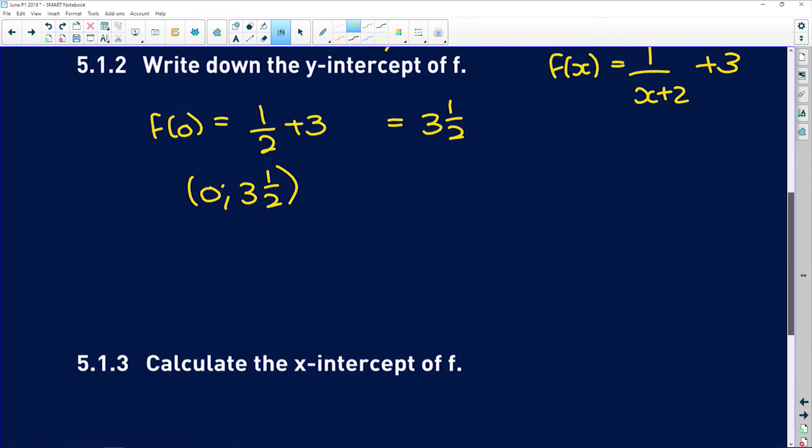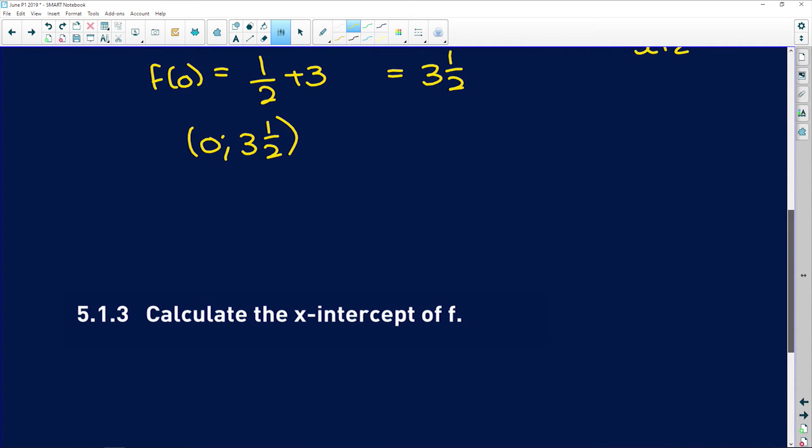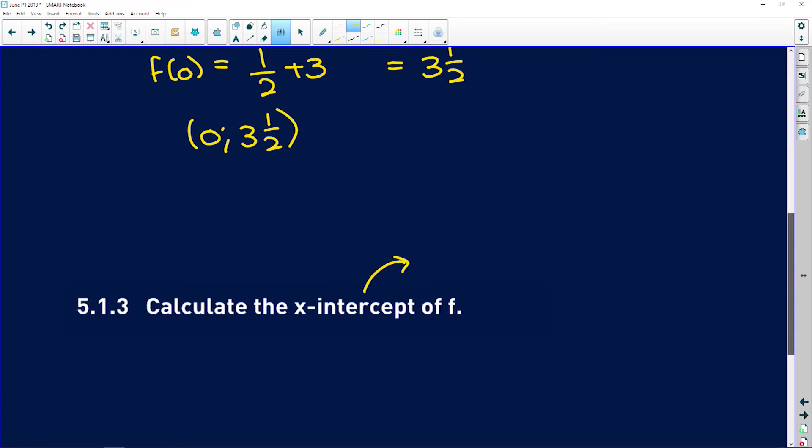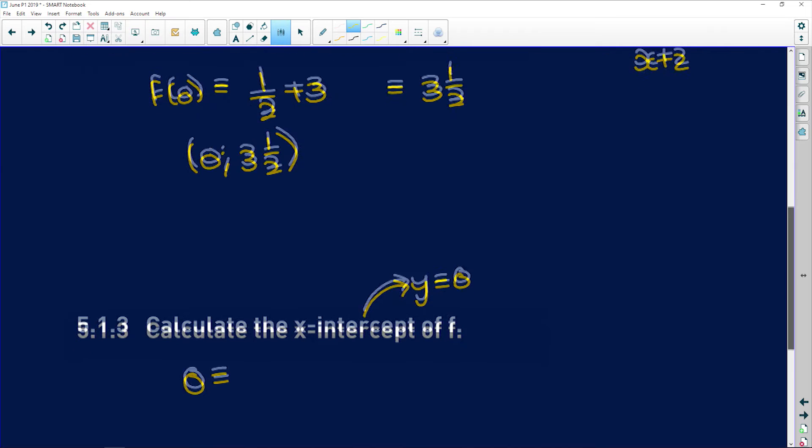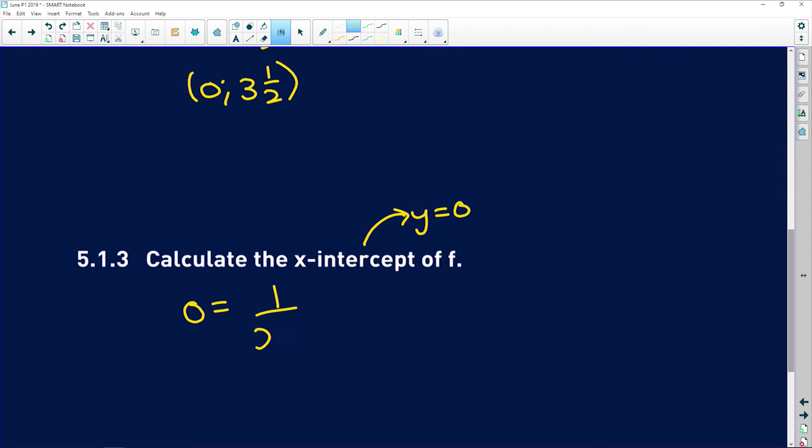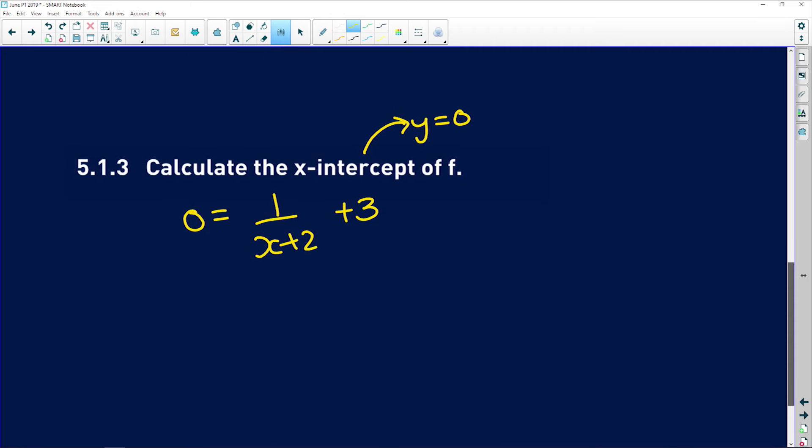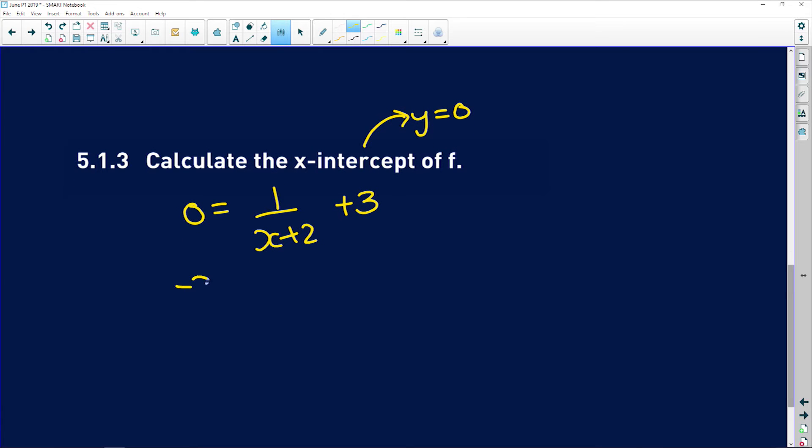Next, it says calculate the x-intercept of f. x-intercept, you make y equal to 0. So we're going to have 0 is equal to 1 over x plus 2 plus 3. So now we subtract 3 from both sides and we get negative 3 is equal to 1 over x plus 2.